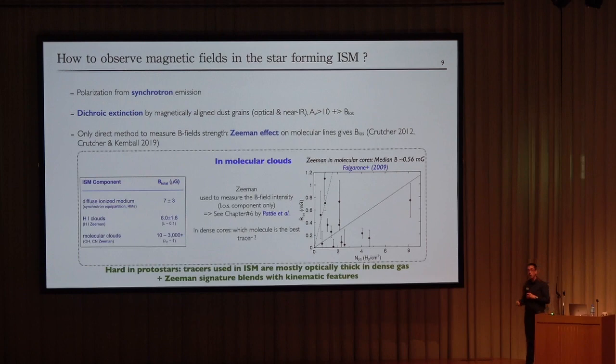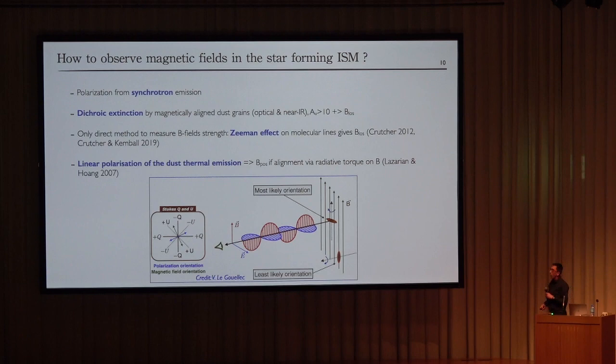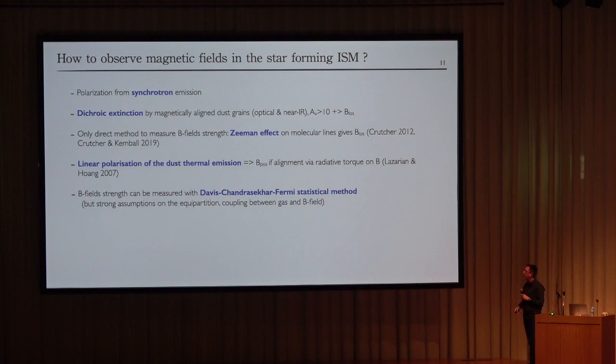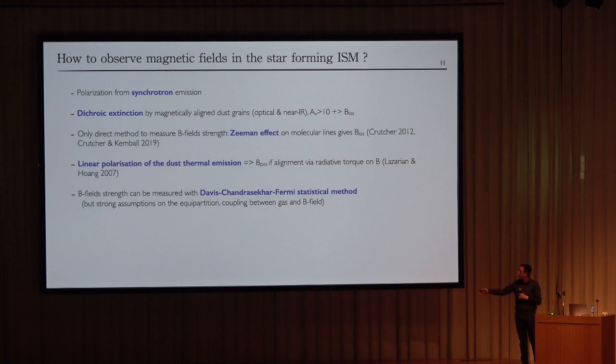We could also use the Zeeman effect, but as density increases the line becomes optically thick and it's hard to detect. Another approach, as seen this morning, is to use linear polarization of dust emission, assuming grain alignment with the magnetic field via the radiative alignment torque theory. This indicates the plane-of-sky magnetic field, and we can use the Davis-Chandrasekhar-Fermi method to get the amplitude. However, this method assumes energy equipartition, which breaks down in a collapsing core where gravity dominates.